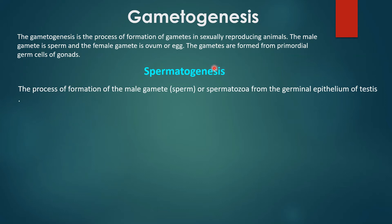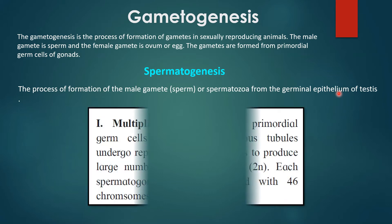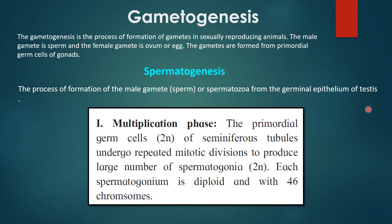Spermatogenesis — genesis means formation, formation of sperm. It is the process of formation of the male gamete, that is sperm or spermatozoa, from the germinal epithelium of testes. It involves three phases. The very first phase is the multiplication phase, where the primordial germ cells (2N) of the seminiferous tubule undergo repeated mitotic division to produce a large number of spermatogonia. Each spermatogonium is diploid with 46 chromosomes.